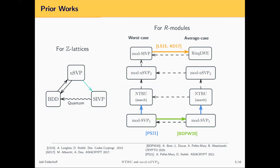Unique SVP is known to be equivalent to bounded distance decoding and SIVP, at least quantumly, for unstructured lattices. For R-modules — polynomial lattices — this was not studied to our knowledge before. We know NTRU and module unique SVP of rank 2 are easier than module SIVP. Since 2021, by Pellet-Mary and Stehlé, NTRU is easier than module SVP in rank 1. We don't know if module SVP of rank 1 is equivalent to NTRU — that's what I present today.